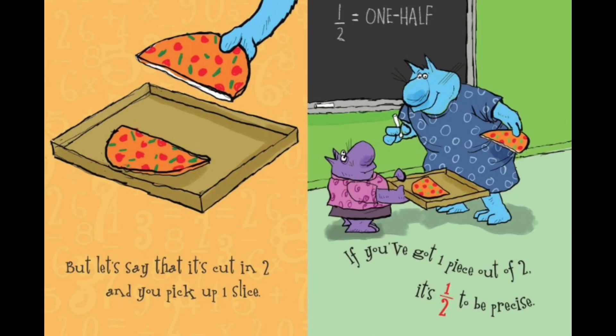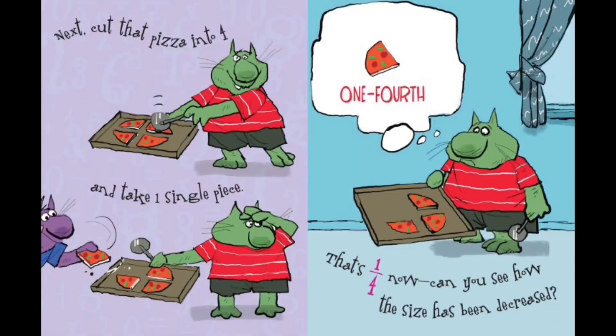But let's say that it's cut in two and you pick up one slice. If you've got one piece out of two, it's one half to be precise. Next, cut that pizza into four and take one single piece. That's one fourth. Now, can you see how the size has been decreased?